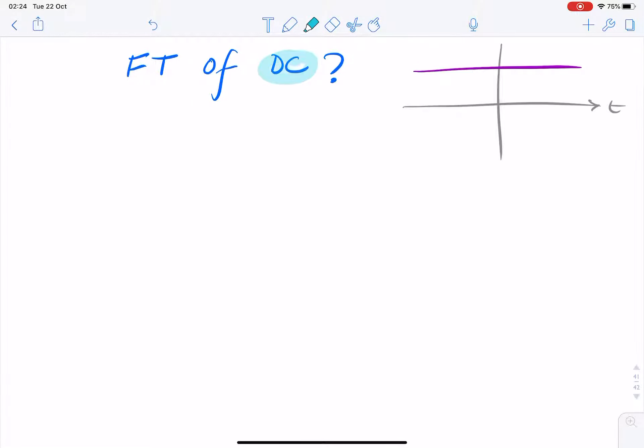So what's the Fourier transform of DC? What's the Fourier transform of a constant signal, a signal with a constant amplitude?